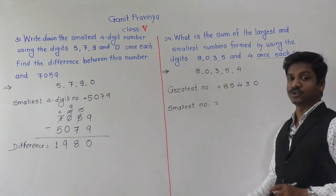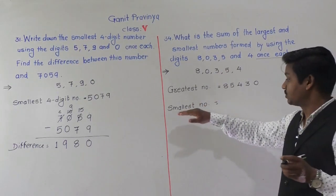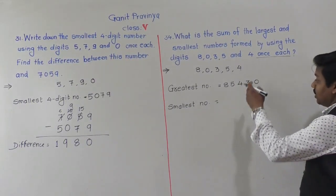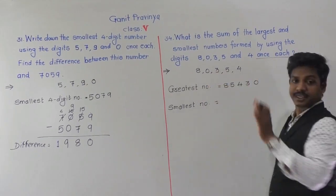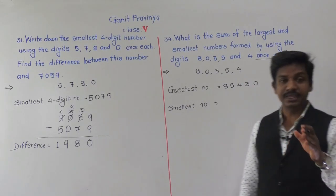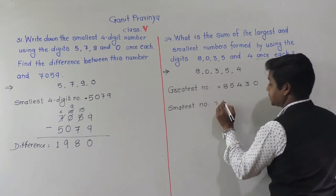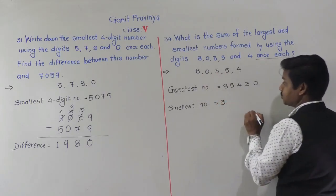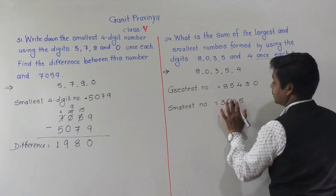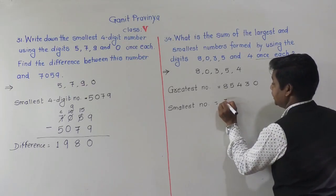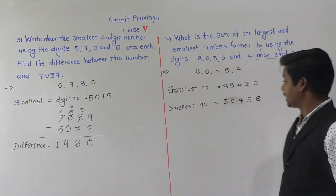To form the smallest number, arrange digits in ascending order, but be careful: 0 cannot be placed at the first position. The second smallest digit is 3, so 3 takes the first position, then 0, then 4, 5 and 8. So the smallest number is 30,458.